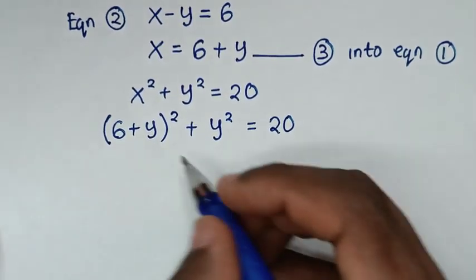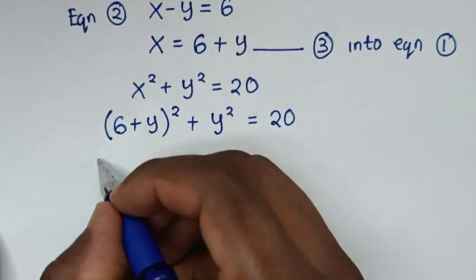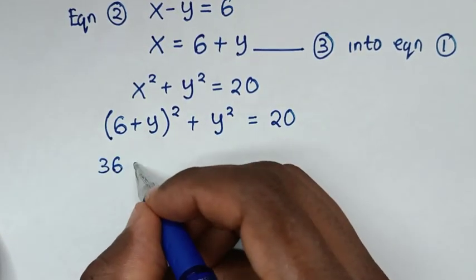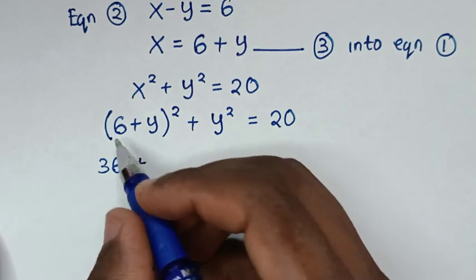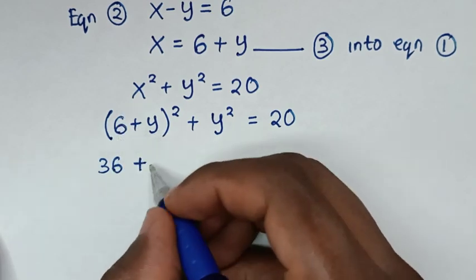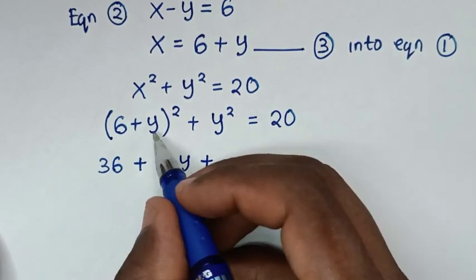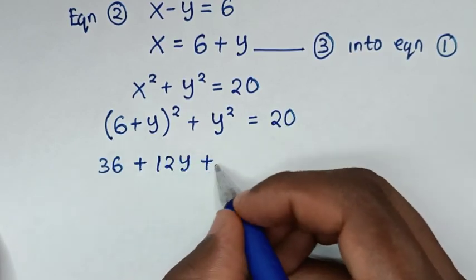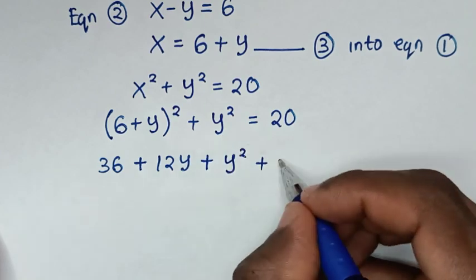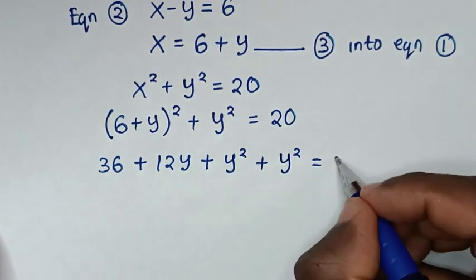Expanding (6 plus y) squared: 6 times 6 is 36, plus 2 times 6 times y is 12y, plus y times y is y squared. So we have 36 plus 12y plus y squared, plus y squared is equal to 20.